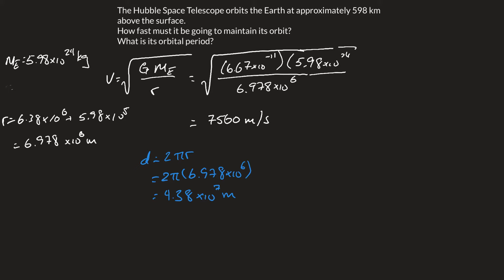If we know distance and we know speed, we can find the time, which is going to be the period. So now we're left with t equals d over v. That's 4.38 times 10 to the 7 meters divided by 7560 meters per second, which leaves us with 5799 seconds.